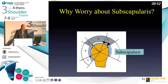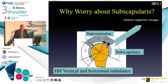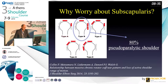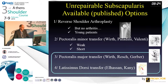So why worry about the subscap? You have the subscap anteriorly, the supraspinatus, and with lesions of both muscles you will have an anterior supra-escape with imbalance of the vertical and horizontal plane of the shoulder. This can appear in more than 80% of cases if you read the publication of Philippe Collin. So this is a very difficult point - what are the options today?